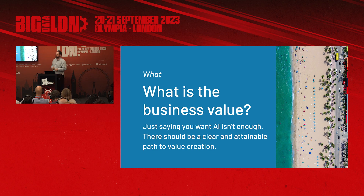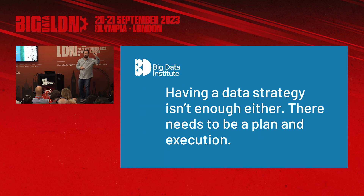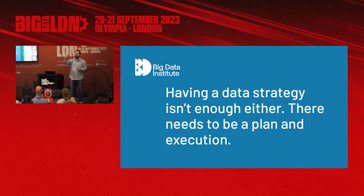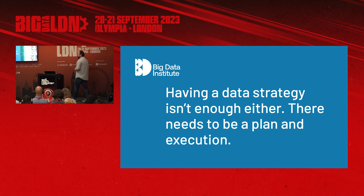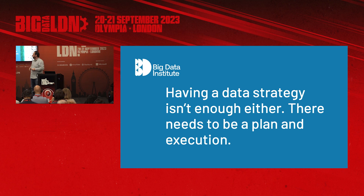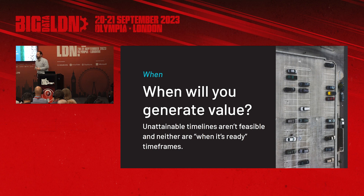Our 'what' is very important because we need to know what our business value is. How many of you could tell me in one clear sentence what the business value you're creating is? That's a problem. We need to be able to say what our business value is. Is your strategy just 'we're going to do AI'? Just saying you want generative AI is not enough. You need to have clear actionable steps, clear goals. If you don't have that, you are not going to succeed.